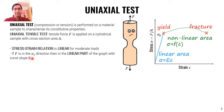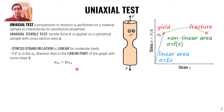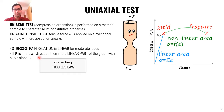If F is in the x1 direction, then in the linear part of the graph with curve slope E, we can write sigma_11 is equal to E times epsilon_11. That's how we relate the stress and strain along the x1 direction, and that's Hooke's law.